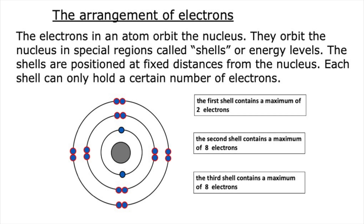To get the most out of this video you should be familiar with atomic structure. The centre of an atom is called the nucleus, and inside the nucleus we have protons that are positively charged and neutrons which are neutral. Orbiting the nucleus we have electrons, which are negatively charged and found in regions called shells. The first shell holds two electrons, the second shell holds a maximum of eight electrons, and the third shell contains a maximum of eight electrons.